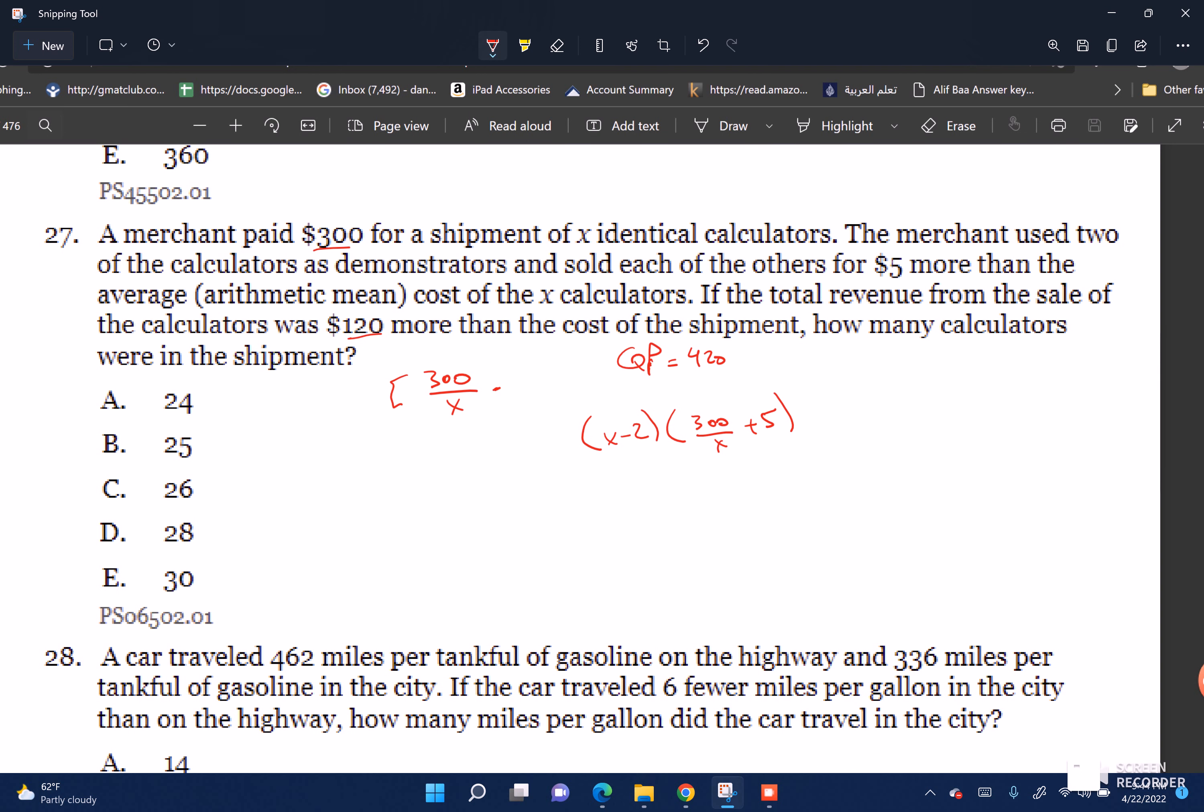Now we solve for X. I'll distribute the numerator first, so X minus 2 times 300 over X plus 5. That gives us X times 300 over X minus 600 over X plus 5X minus 10 equals 420.